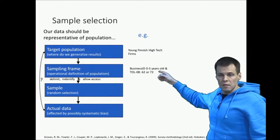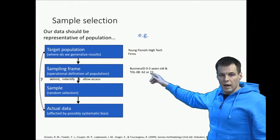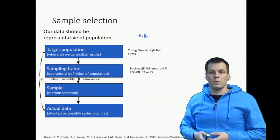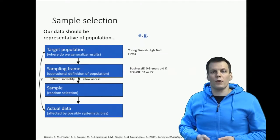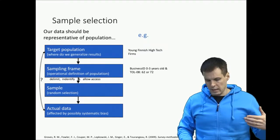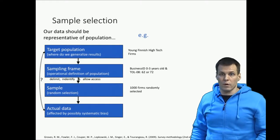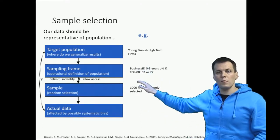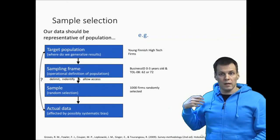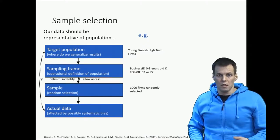We can define young technology companies as companies that are zero to three years old and are in certain industry codes, for example 62 or 72, which correspond to information technology industries. That is our operational definition and it allows us to get a list of actual companies. Then we get a sample — let's say a thousand firms randomly selected from a sampling frame of maybe 5,000 or 10,000 companies. The reason for taking a sample that we email is cost: address acquisition costs some money, and if we mail physical letters there are printing costs.